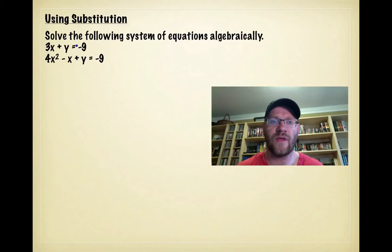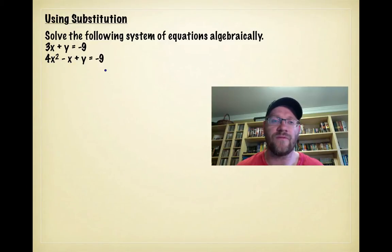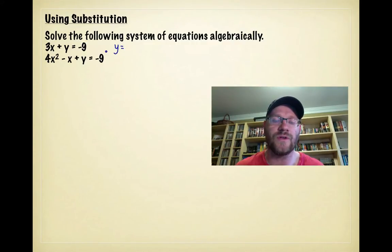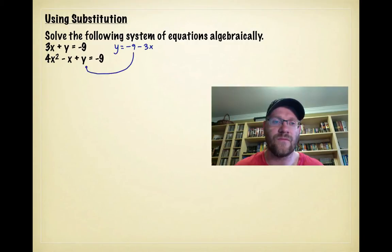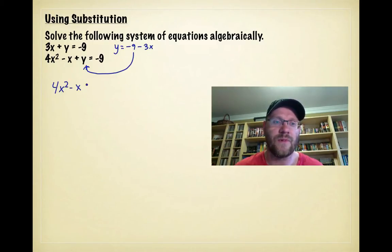Using substitution — here's our example. Solve the following system of equations algebraically: 3x + y = −9 and 4x² − x + y = −9. When solving using substitution, you make a substitution from one equation into the other. I'll rewrite the first equation as y = −9 − 3x, moving the 3x to the other side, and then substitute that into the second equation for y, since I've isolated y. So I get 4x² − x + (−9 − 3x) = −9.